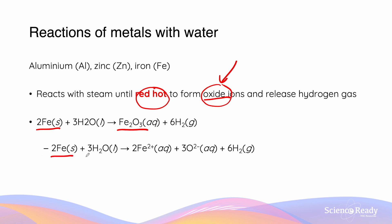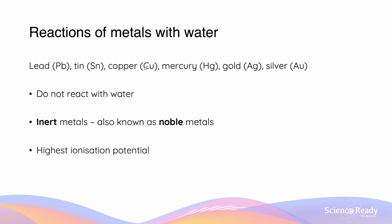In the complete ionic equation, the iron starts neutral and turns into Fe²⁺ as it is ionised. Lead, tin, copper, mercury, gold, and silver are all examples of metals which do not react with water. They are called inert metals, also known as noble metals, because they are unreactive. The reason they don't react is because they have the highest ionisation potential, meaning they are the most difficult metals to ionise.